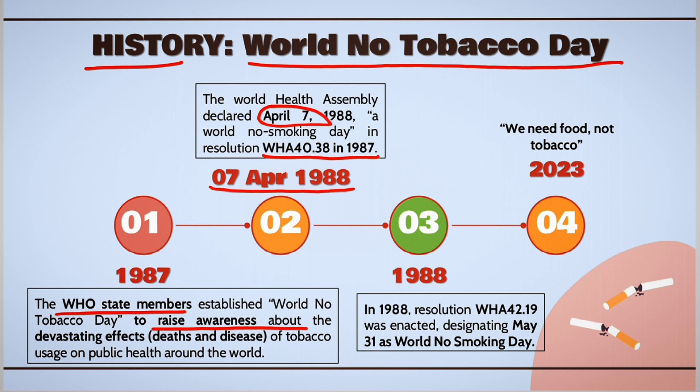However, in 1988, one more resolution, WHA 42.19, was passed and the World No Smoking Day was changed from 7th April to 31st May. Since then, we observe every year on 31st May as World No Smoking Day or World No Tobacco Day.